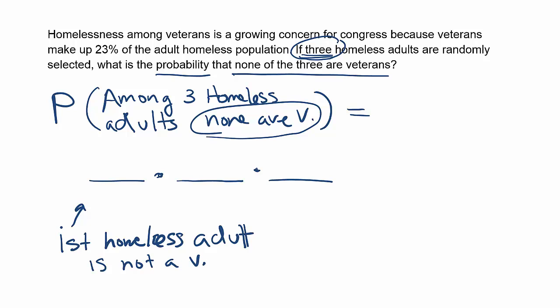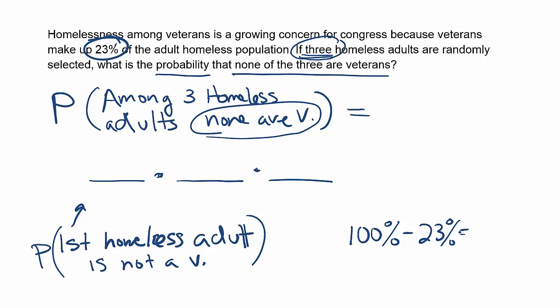What we need to put in that space is the probability of that occurring. It tells us that 23% of the adult homeless population is a veteran, so what's left over from 100%? We need the probability that someone is not a veteran. If you take 100% and subtract 23%, you get 77% — that's the percent of the homeless population that is not a veteran. We'll write it as a decimal, 0.77, and that's the probability that the first homeless person selected is not a veteran.